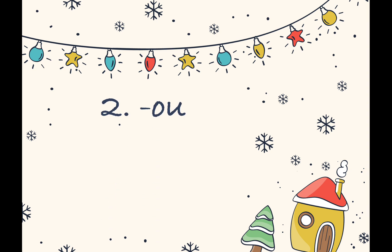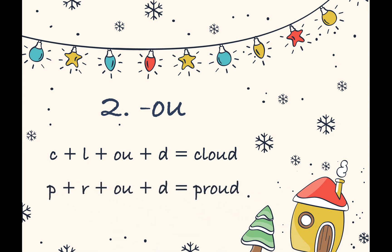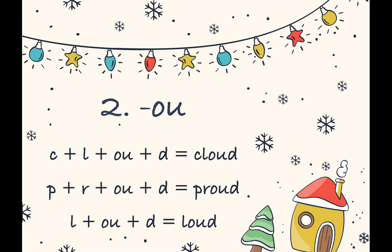What words have the A sound? That's right — cloud. Cloud: k, l, ow, d — you get cloud. Next, proud: p, r, ow, d — you get proud. Finally: l, ow, d — you get loud.